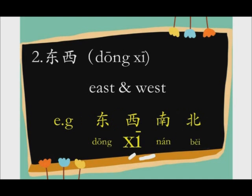If it's pronounced as 东西, then it means the direction, east and west. For example: 东 — east, 西 — west, 南 — south, 北 — north. Say it again: 东西.